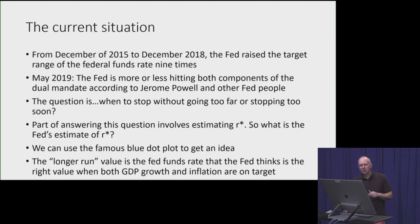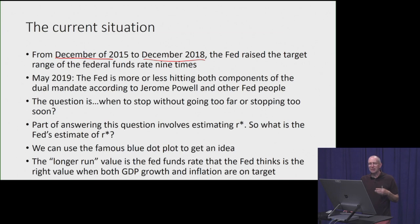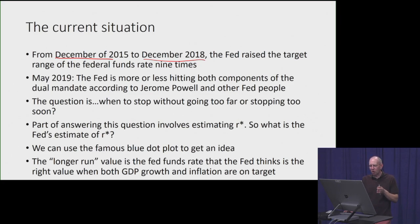Let's take a look at the current situation. From December 2015 to December 2018, the Fed raised its target federal funds rate nine times. In May 2019, according to Jerome Powell, the Fed said they were more or less hitting both components of the dual mandate — hitting their inflation target of approximately 2% and operating more or less on the long-run aggregate supply curve. In other words, the policy rate ought to be fairly neutral in this framework. The real question for the Fed is when to stop — without going too far or stopping too soon. Part of thinking about the right federal funds rate involves estimating R-STAR.